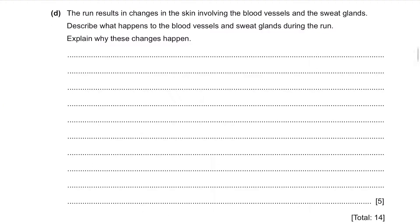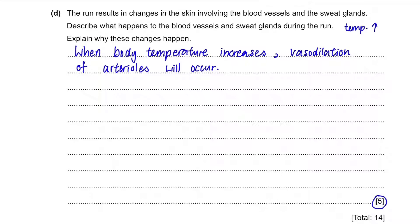Part D: the run results in changes in the skin involving blood vessels and sweat glands — describe what happens and explain why. When you run, body temperature increases, so this is about the effect of homeostasis on blood vessels and sweat glands. For blood vessels: when body temperature increases, vasodilation of arterioles occurs — the temporary widening of blood vessels to let more blood flow. This vasodilation allows an increase in blood supply to skin capillaries, resulting in loss of heat by radiation to the atmosphere, thus lowering body temperature.